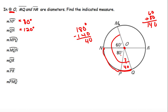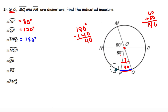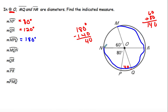For arc NPQ: since NPQ spans a full diameter line, NPQ is going to be 180 degrees. For arc MQN: we're going around from M through Q to N. This is a major arc, so we do 360 minus 60, which gives me 300.